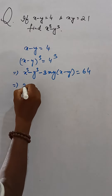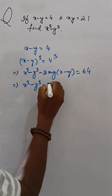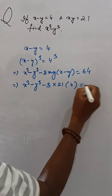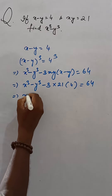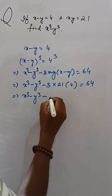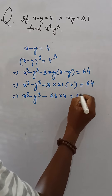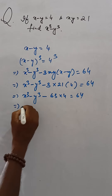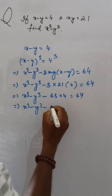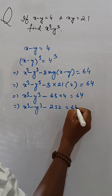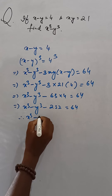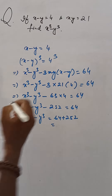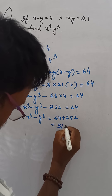Then x cube minus y cube minus 3 times xy, that is 21, into x minus y, that is 4, is equal to 64. So x cube minus y cube minus 63 into 4 is equal to 64. This gives x cube minus y cube minus 252 is equal to 64. Therefore, x cube minus y cube is equal to 64 plus 252, that is 316.